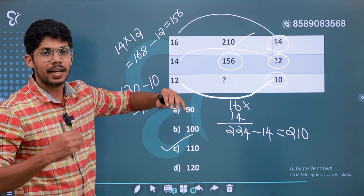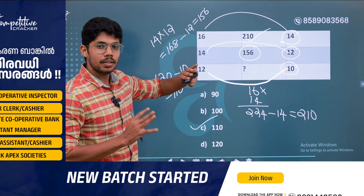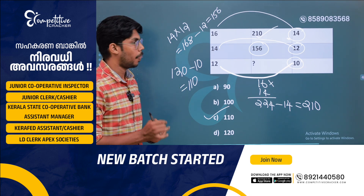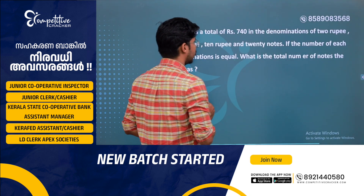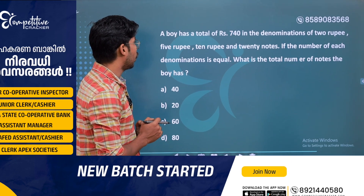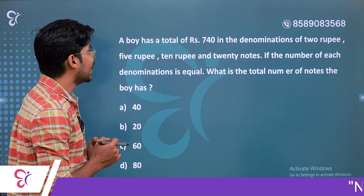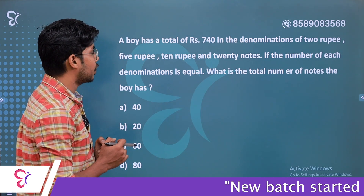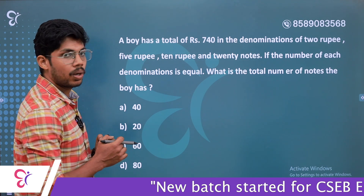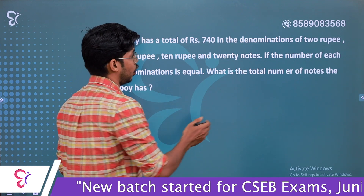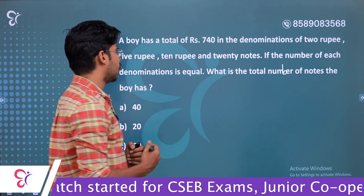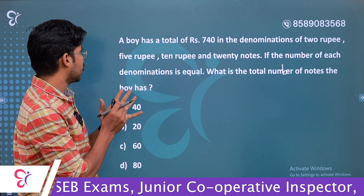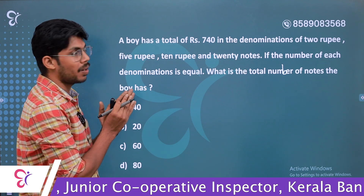A boy has a total of rupees 740 in the denominations of 2 rupee, 5 rupee, 10 rupee, and 20 rupee notes. If the number of each denomination is equal, what is the total number of notes the boy has?